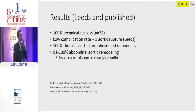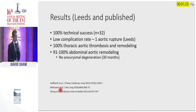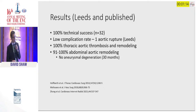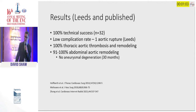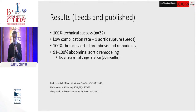This is an accumulation of results from published series and from our own series. We had 11 patients and Melisano has 10 patients. This shows a 100 percent technical success rate, 100 percent thoracic aortic thrombosis and remodeling, and 91 to 100 percent abdominal aortic remodeling. Even in those patients who have a persistent false lumen in the abdominal aorta, at 30 months there has been no aneurysmal degeneration, suggesting no need for further intervention in the long term.